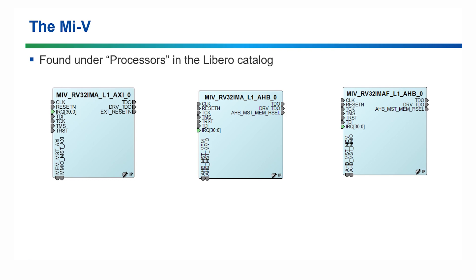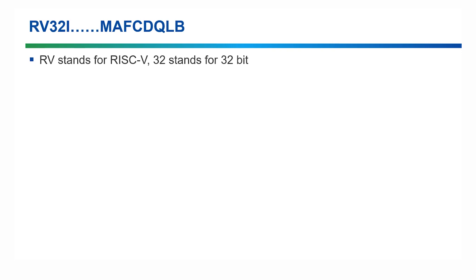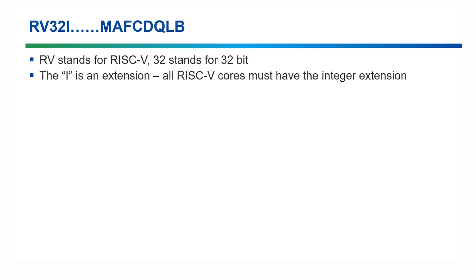I'm going to explain what these names mean piece by piece. The MiV we already know, so let's talk about the RV32. The RV stands for RISC-V and the 32 stands for 32-bit. The ISA is extensible, meaning you get a base and you can build on that. The minimum you need to have is the RV32-I. The I is the extension and it's the base integer instruction set — without this, you can't have a RISC-V core.